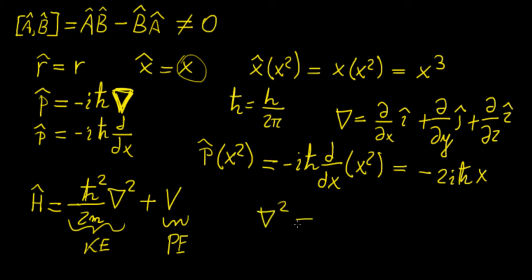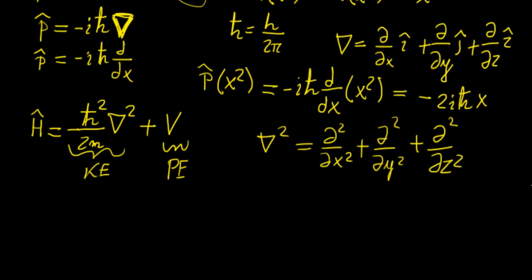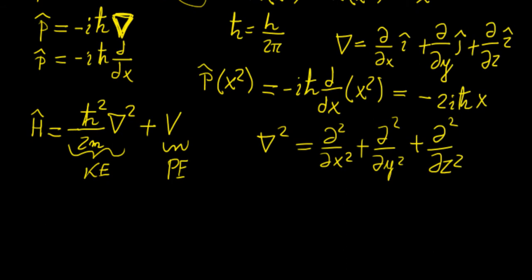Here we have ∇ squared, which is the Laplacian — simply the sum of the second partial derivatives. The reason the Hamiltonian is very general is that while the kinetic energy always has this fixed term, the potential energy is an arbitrary function that can depend on both space and time. There are infinite possibilities for the potential function, so defining the potential is essential to solving any problem involving the Schrödinger equation. For most cases, even for simple potentials, it is not possible to obtain an exact solution.